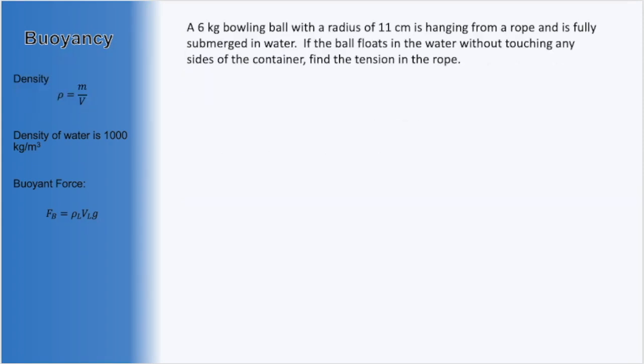Let's take a look at some examples to see how the buoyant force works. Here we have a 6 kg bowling ball with a radius of 11 cm hanging from a rope and fully submerged in water. If the ball floats in water without touching any of the sides of the container, find the tension in the rope.